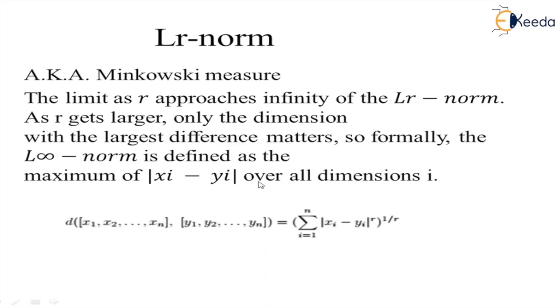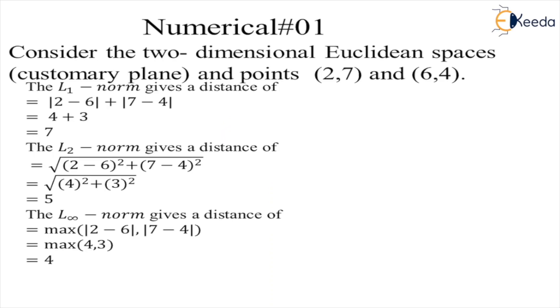Let's understand all those distances. Consider two-dimensional Euclidean space with points (2,7) and (6,4). We are going to find the L1 norm. In L1 norm, we calculate with the formula |2-6| + |7-4|. We subtract x-coordinates and y-coordinates and add them: |2-6| + |7-4| = 4 + 3 = 7. The L1 norm distance is 7 units.